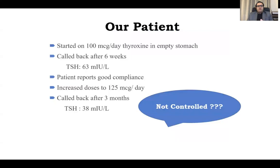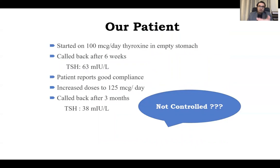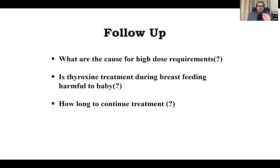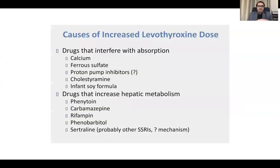In our patient, we started with 100 mcg of thyroxine on an empty stomach and called the patient back after six weeks. TSH was 63. Patient reported good compliance. Dose was increased to 125 mcg; called after three months and TSH was still 38. This patient is not responding as desired — TSH should be normalized in three to four months. What are the causes of high dose requirements? How long to continue? Is thyroxine safe during breastfeeding? These are the three further questions.